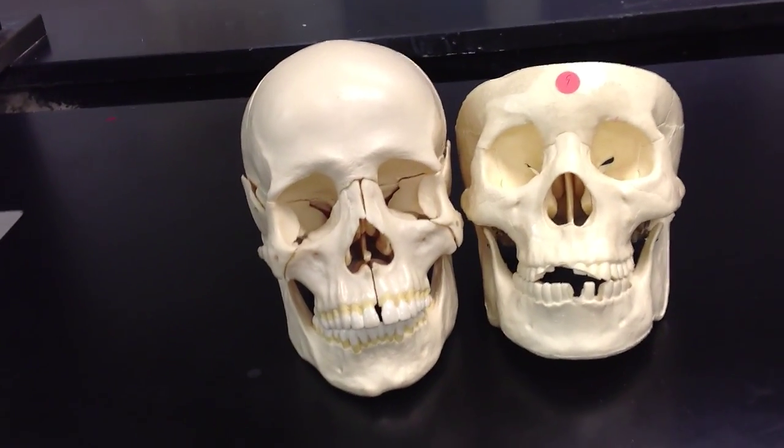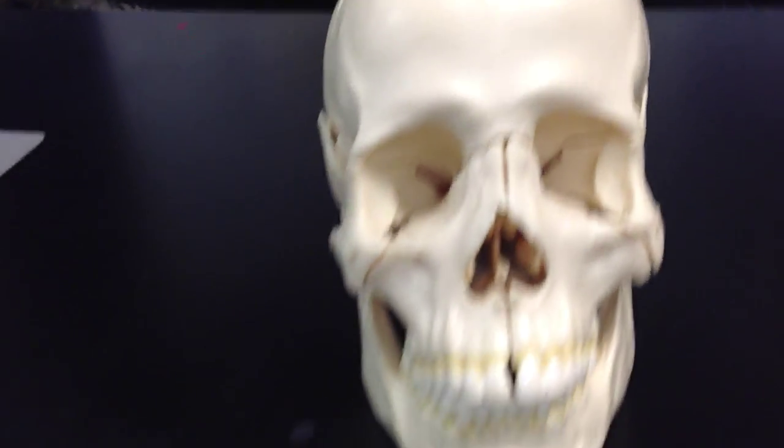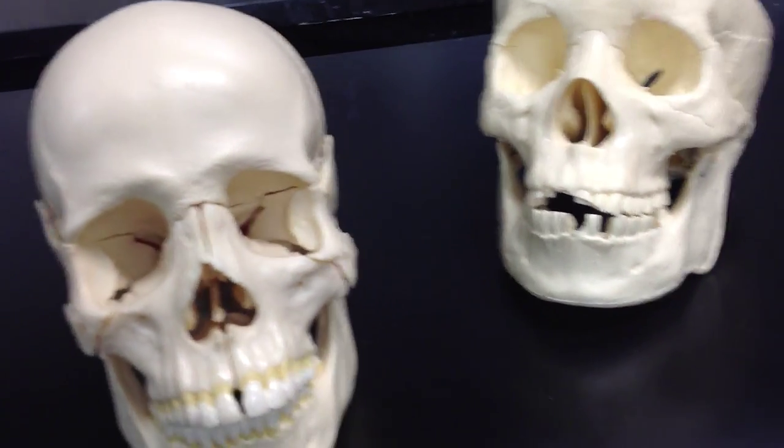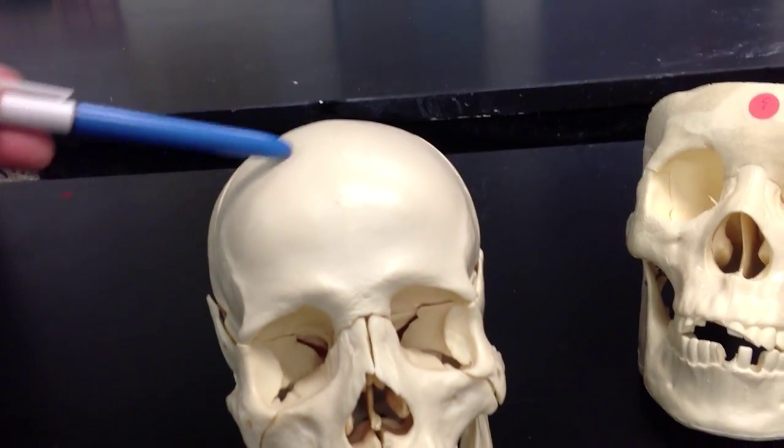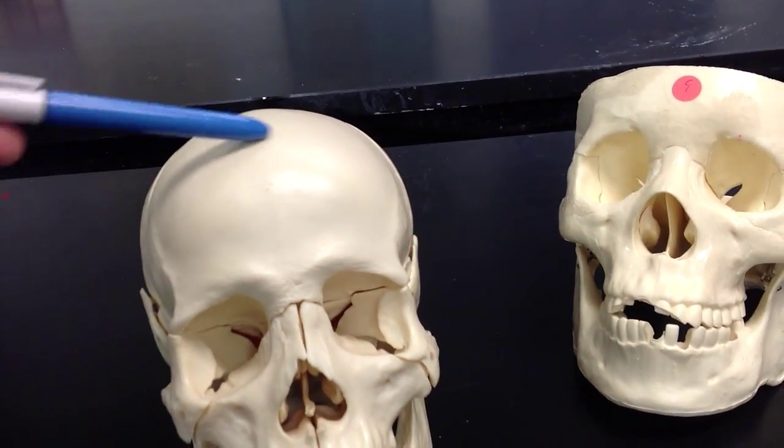As we look at the skull, we'll start off with this one over here to the left. When we look at this one right here, the first thing we're going to look at is this bone right here, the frontal bone.